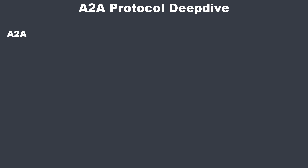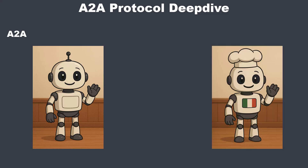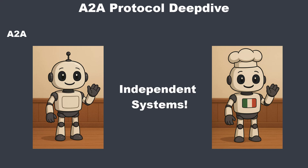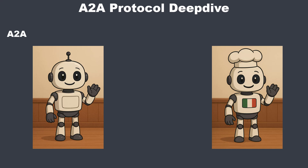But A2A is designed for a different scenario. Here a customer's agent, say on a smartphone, is a completely independent application. The restaurant's agent is a second independent application running on the restaurant server. They are not in the same system, so they can't just talk to each other. They need a formal, standardized way to communicate, just like a real customer walking up to the counter.